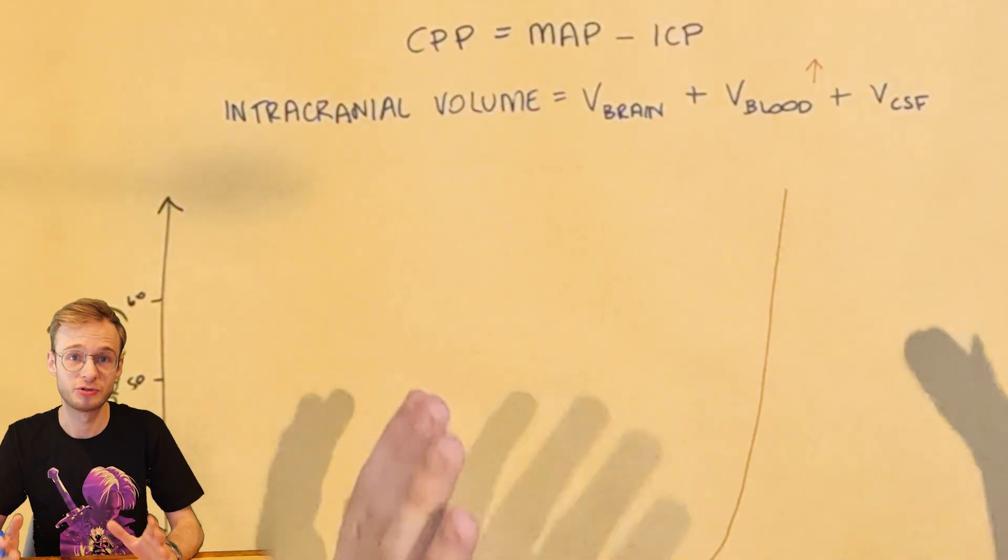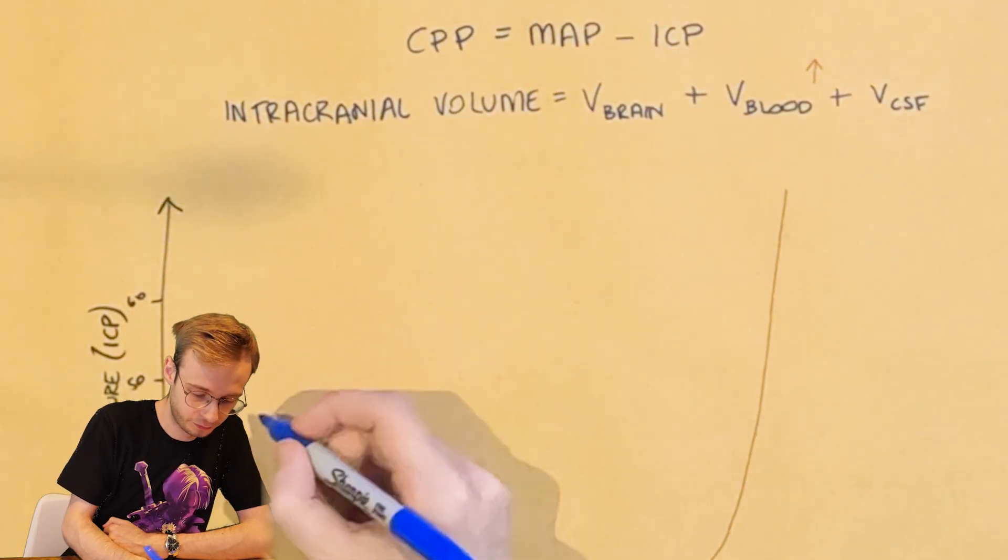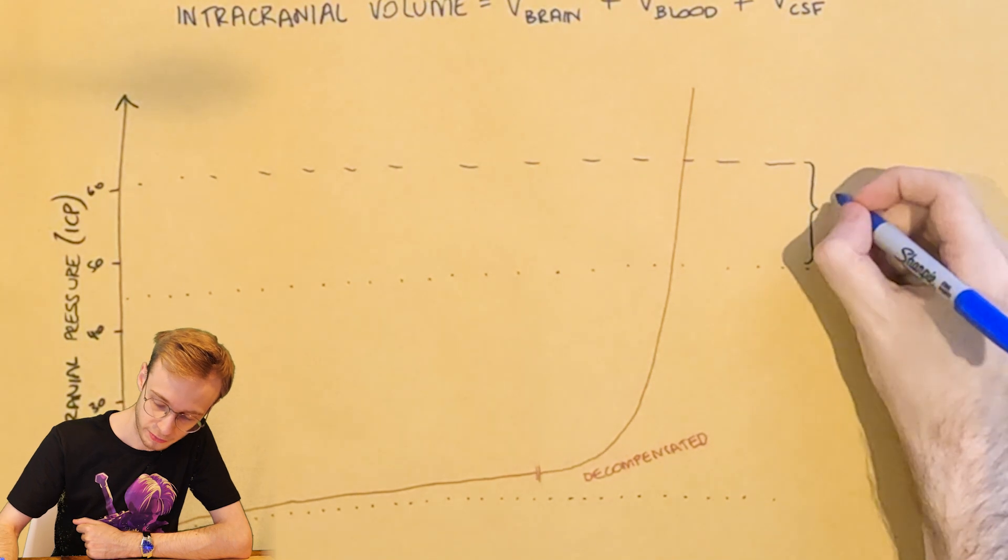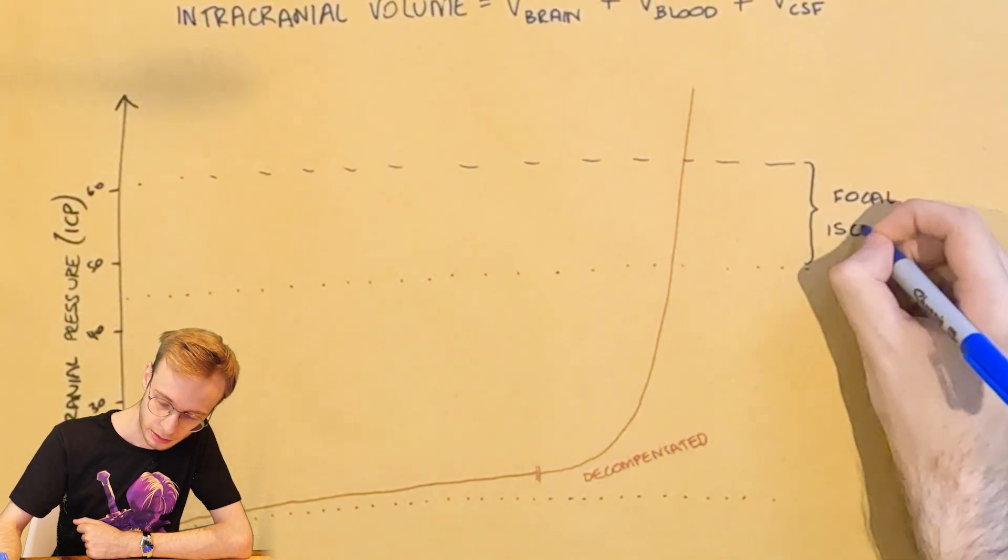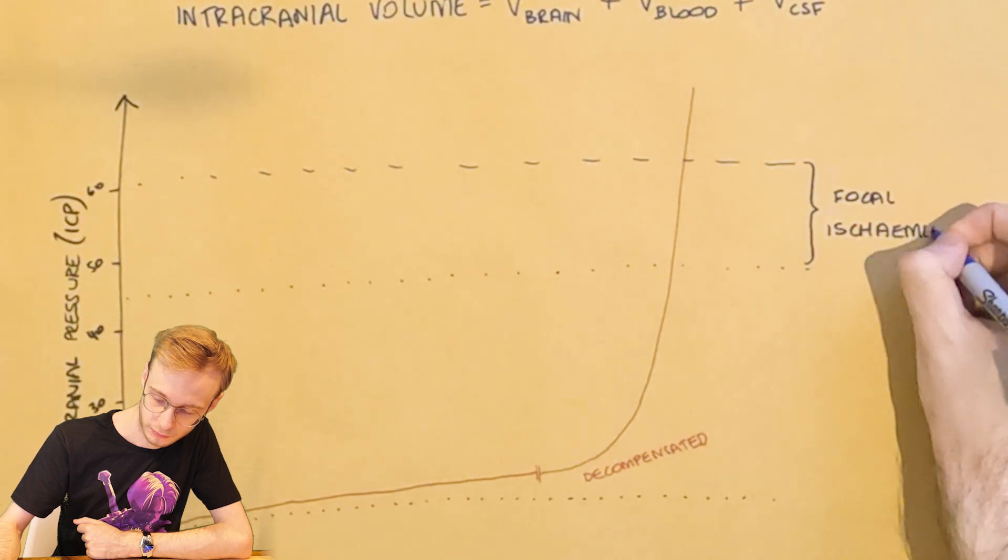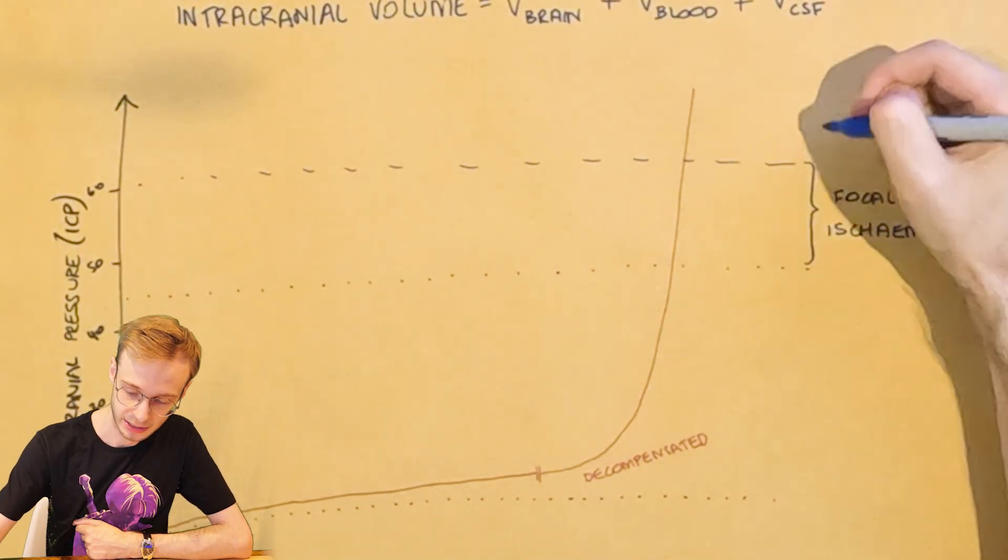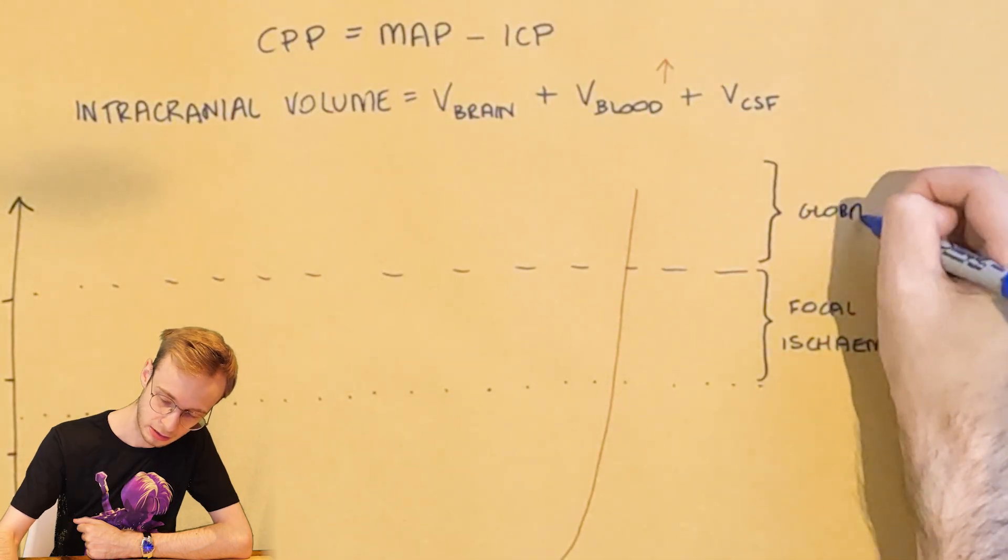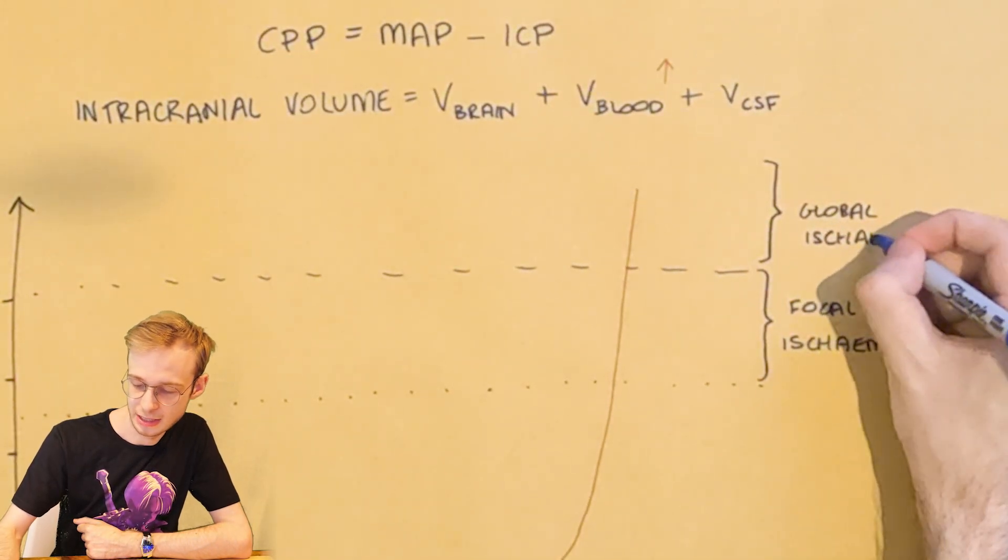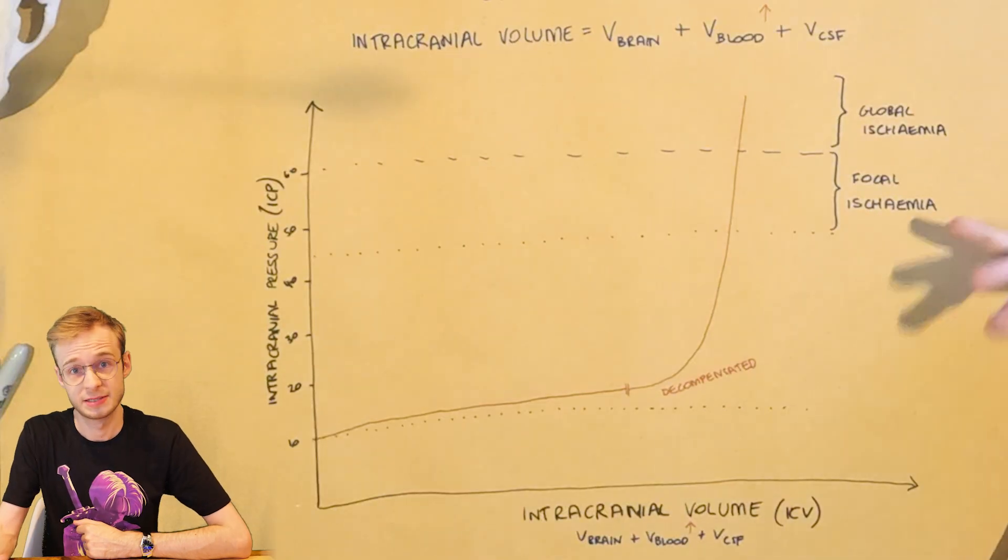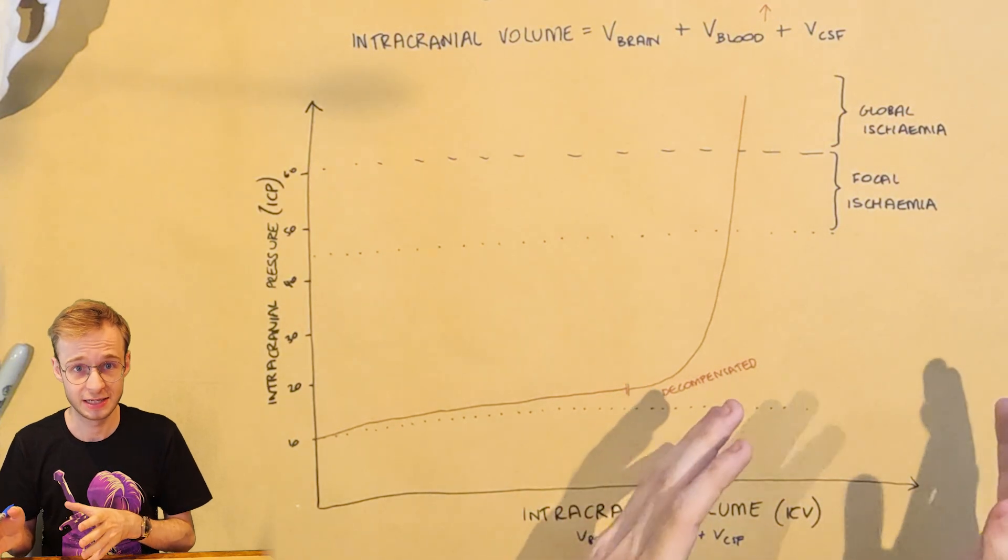And if CPP drops too low, the brain does not get the oxygen it needs. And when the pressure starts to build, you will begin to get focal ischemia in the areas local to where this pressure buildup is happening. But when that gets bad enough, you will begin to get global ischemia, hypoxic cellular injury to the entire brain. Cells start to die, you develop hypoxic brain injury, your cells cannot get the oxygen that they need.